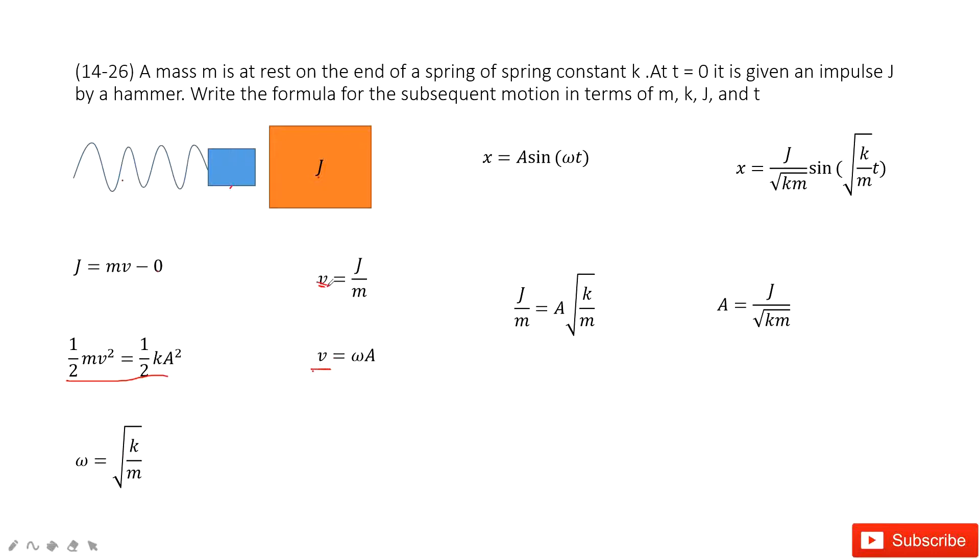This equals v, and from impulse-momentum, v also equals J over m. So we can equate these two expressions and solve for the amplitude A, which equals J over square root of km.